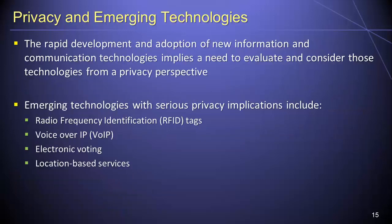The rapid development and adoption of new information and communication technologies implies a need to evaluate and consider those technologies from a privacy perspective. It is not typically anything intrinsic about a particular new technology that raises privacy concerns — rather, it is how a technology is used and applied that reflects its privacy implications. Some emerging technologies with potentially serious privacy implications include radio frequency identification, or RFID tags, voice over IP, electronic voting, and location-based services.